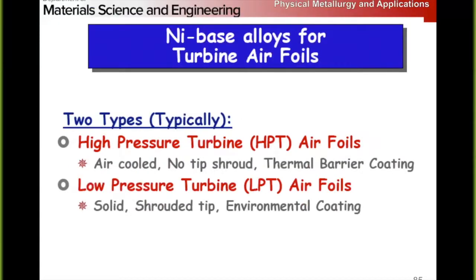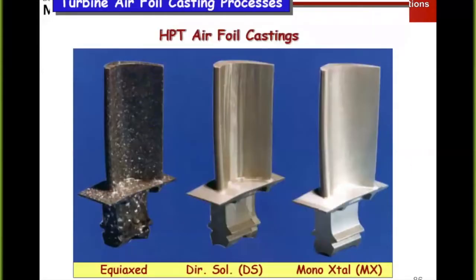So for the last couple of slides, we want to talk about airfoils. Remember, the disc is what holds the airfoils. The turbine blade is what's actually in the hot gas — the little flying wings, basically. They are airfoils that spin through the air and generate thrust as the hot gas is expanded across them.